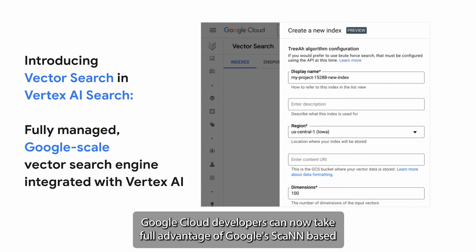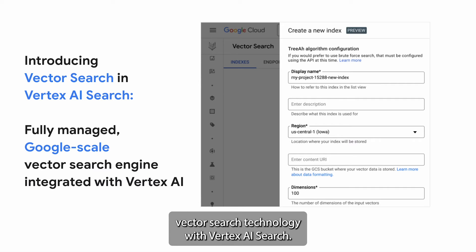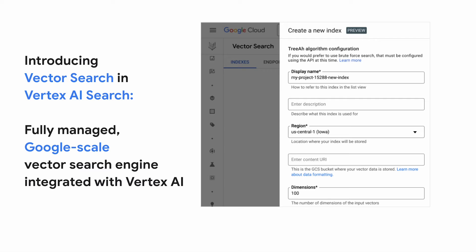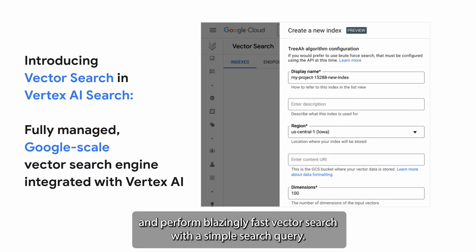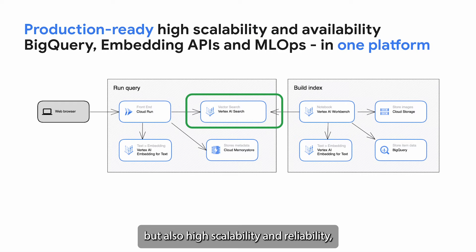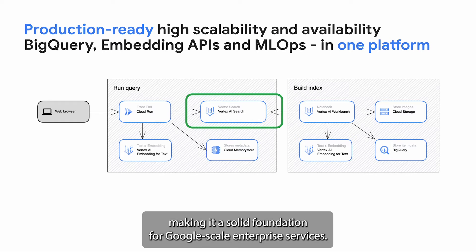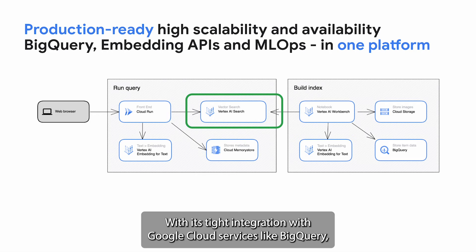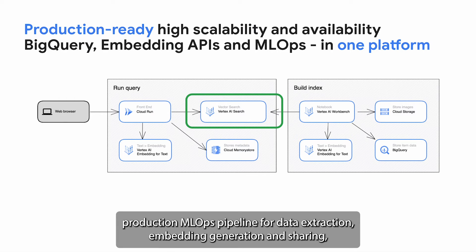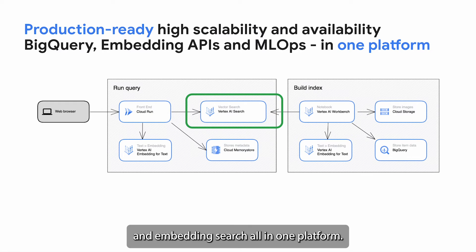Google Cloud developers can now take full advantage of Google's SCAN-based vector search technology with Vertex AI Vector Search. It is a fully managed service that makes it easy to add embeddings to an index and perform blazingly fast vector searches with a simple search query. Vector search offers not only top-notch performance, but also high scalability and reliability, making it a solid foundation for Google-scale enterprise services. With tight integration with Google Cloud services like BigQuery, Vertex AI Embeddings API, and Feature Store, you can quickly build and operate a production MLOps pipeline for data extraction, embedding generation and sharing, and embedding search — all in one platform.